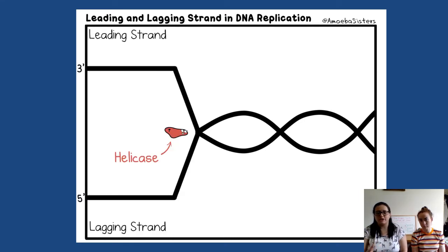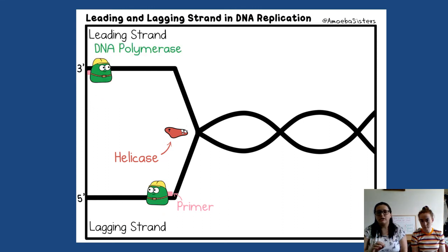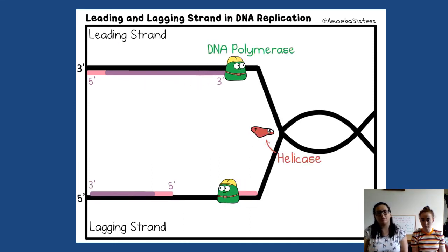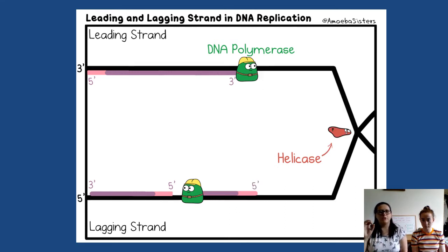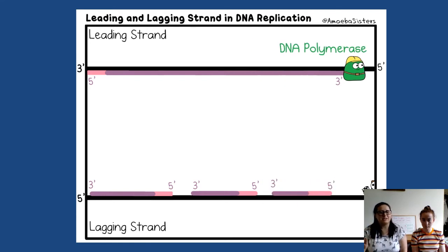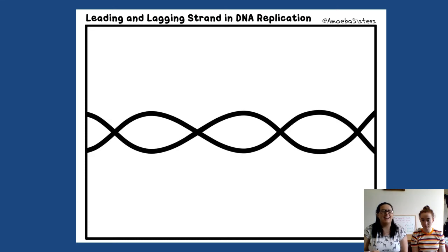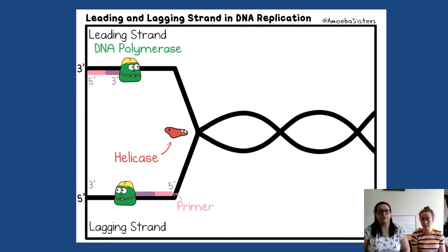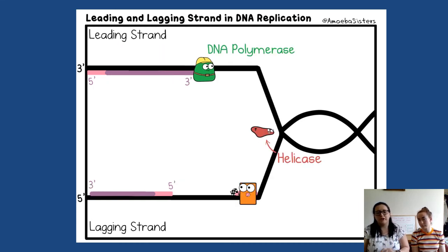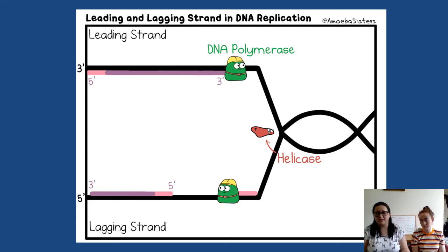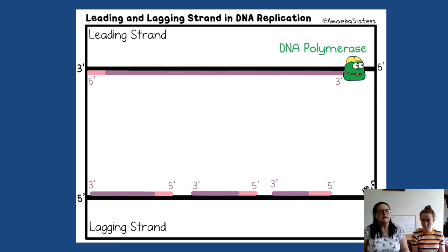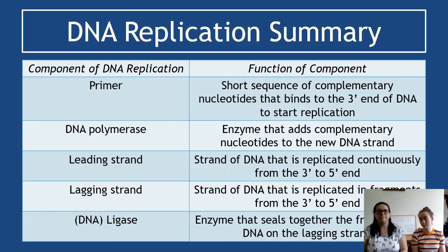A GIF shows this action in motion. You can see the bottom strand as the lagging strand and the top as the leading strand. Ignore helicase — it's just an enzyme that unwinds the chromosome and you won't be asked about it. You can see the primer added in pink, DNA polymerase in green adding nucleotides, and ligase joining the lagging strand fragments. One caution: Amoeba Sisters' video describes replication happening 5' to 3' — ignore that; it's always 3' to 5'.